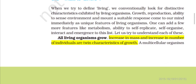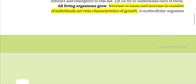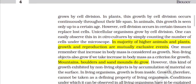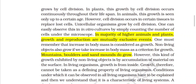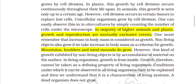In plants, growth continues throughout their lifetime - as long as the plant is alive, it keeps growing. In animals, growth happens only up to a certain age; in humans, growth occurs until adolescence. Unicellular organisms grow by cell division. In higher animals and plants, growth and reproduction are separate processes, but in unicellular organisms, growth and increase in number (reproduction) are the same.